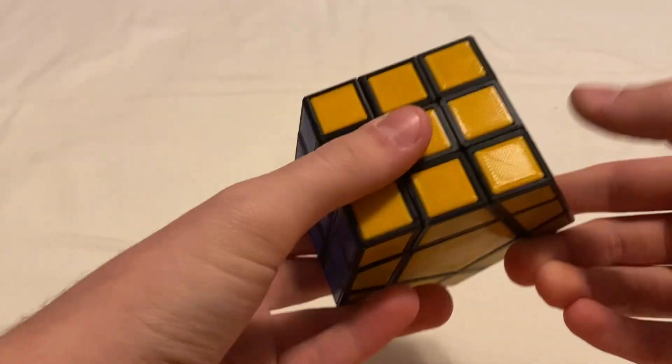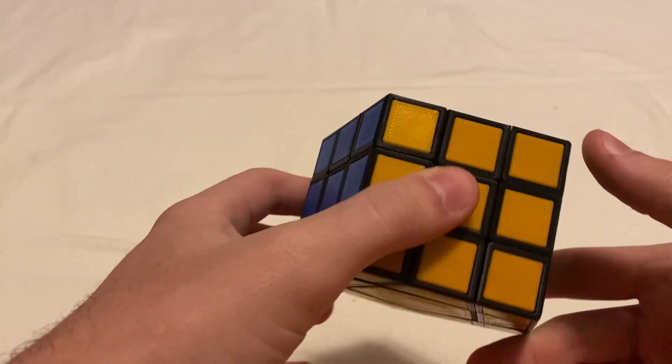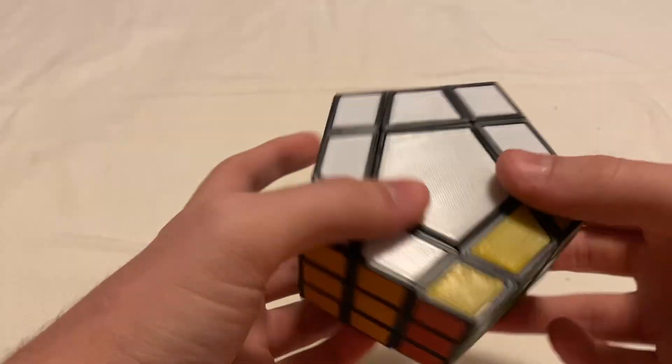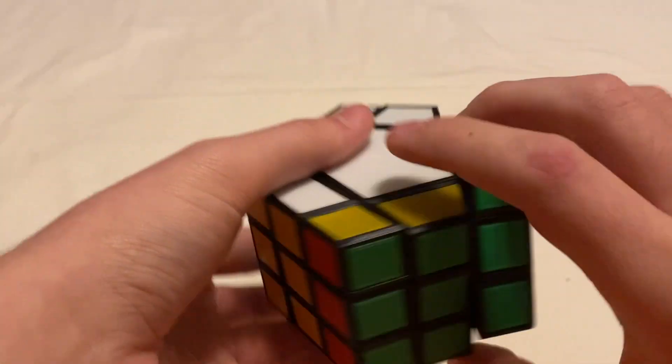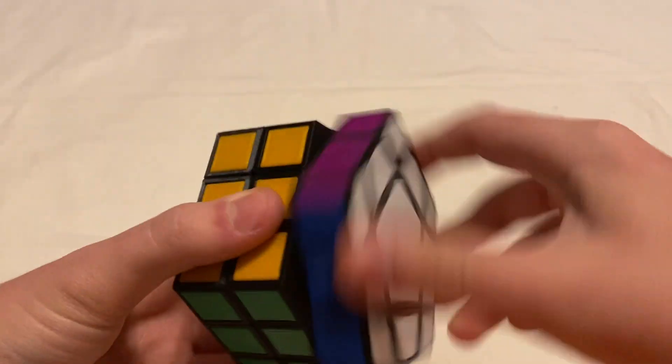This time, I made a face-turning pentagonal prism. So, this puzzle turns on these square faces, as well as the top and bottom pentagonal faces.